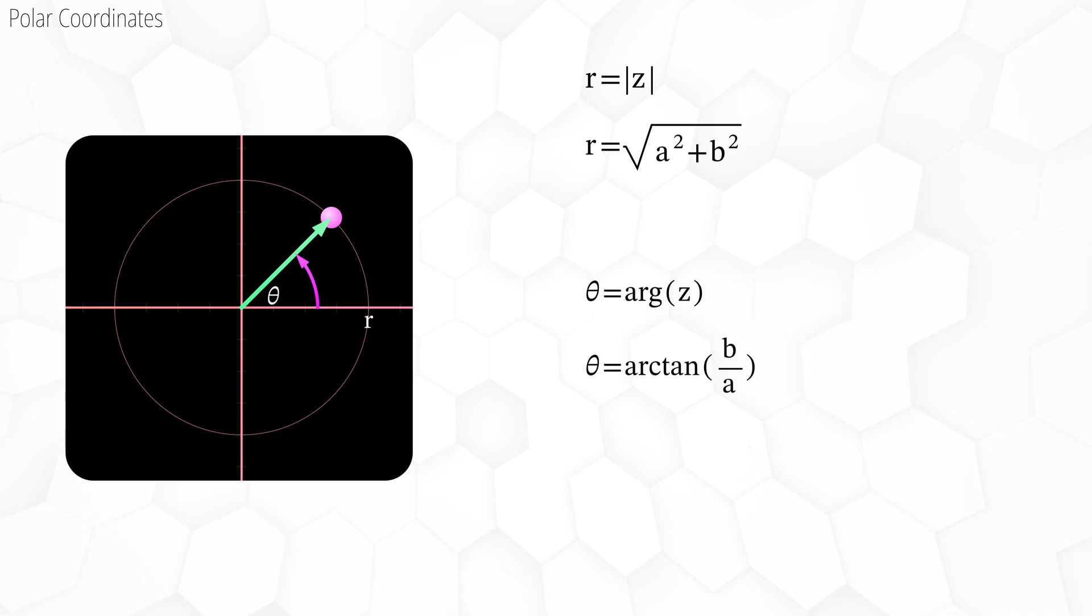To convert from Cartesian form, we can calculate theta using standard trigonometry. Theta equals the arctan of b over a. However, remember that the inverse tan function on your calculator doesn't always give you the result in the correct quadrant. If the real component is zero or negative, you'll need to adjust theta appropriately. If you are using a computer, just use the atan2 function. Theta equals atan2 of b comma a. This function will give you the result in the correct quadrant automatically.